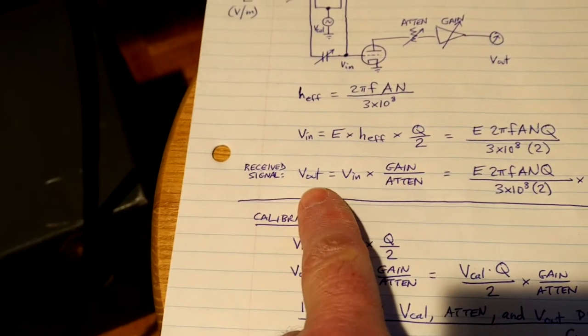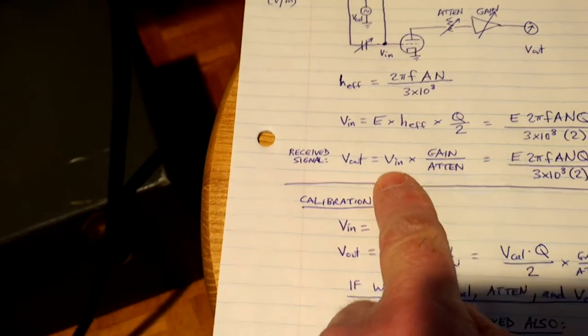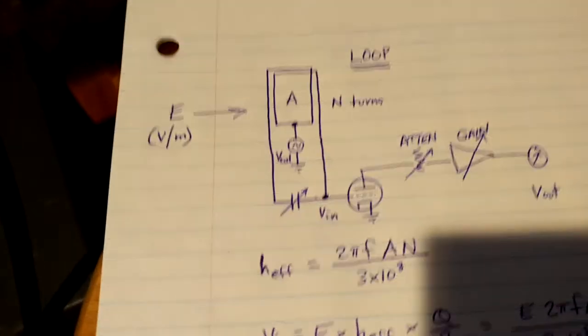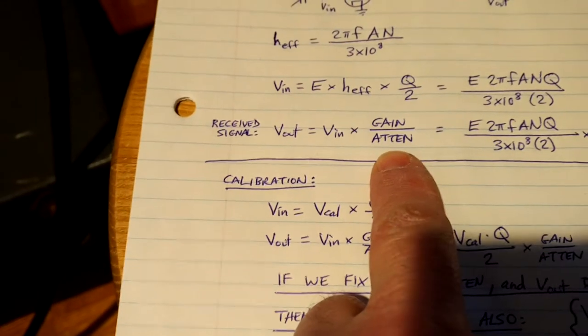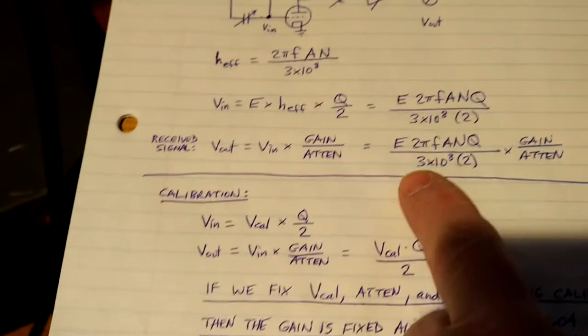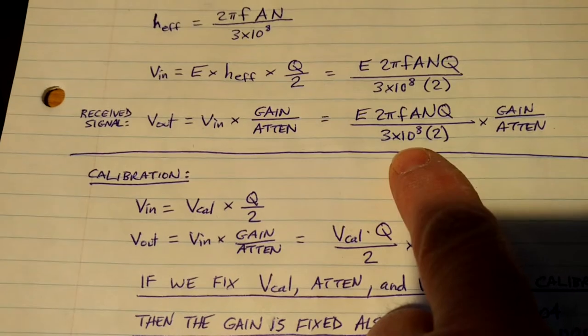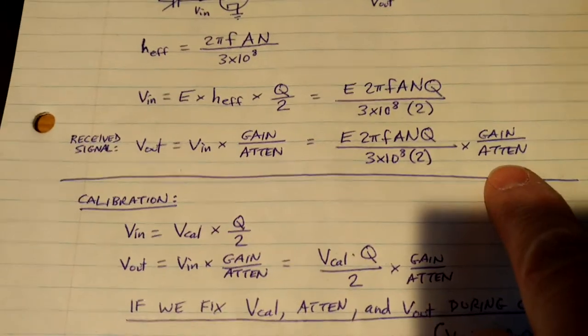So the received signal then, at the output meter, will be the input voltage times the gain of the IF amplifier, divided by the attenuation factor. So putting all the terms together, the output voltage on the main meter is the electric field times 2πFANQ, over 3 times 10 to the 8th, 2, times gain or attenuation.